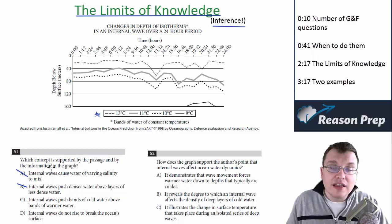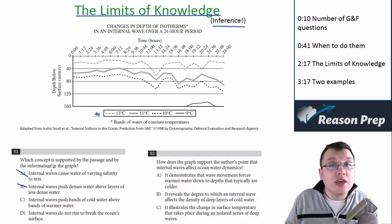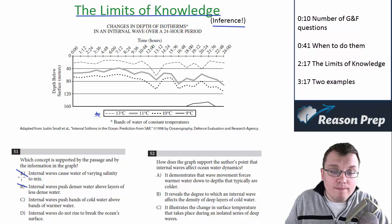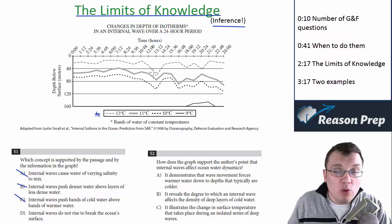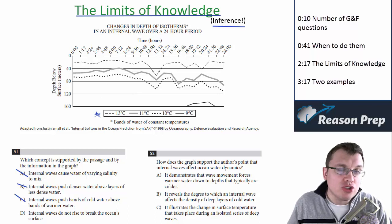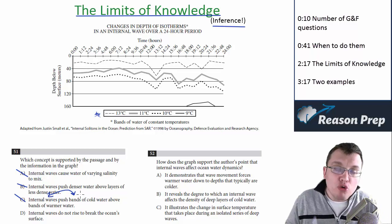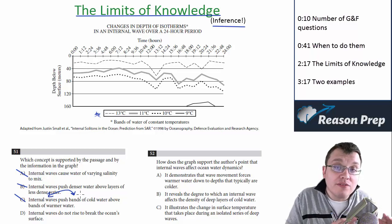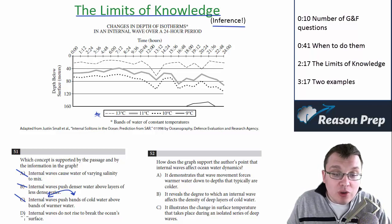Same thing with A, varying salinity. The passage said something about salinity, but this figure doesn't, so we cannot go that far. Same thing with C. 'Internal waves push bands of cold water above bands of warm water.' The trap here was it looked like this was true when it came to the figure, but when we went to the passage, we actually saw that the causality, the causal arrow, was flipped. The movement of the water caused the waves, not the waves causing the movement of the temperature water.